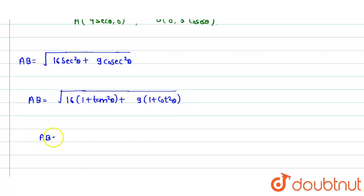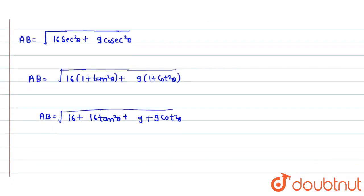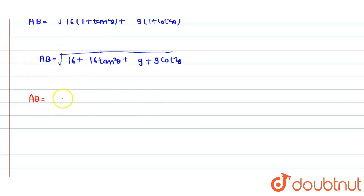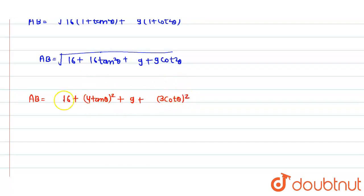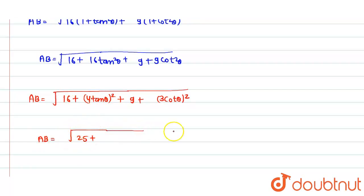Expanding: AB = √[16 + 16tan²θ + 9 + 9cot²θ]. We can rewrite this as AB = √[(16 + 9) + (4tanθ)² + (3cotθ)²] = √[25 + (4tanθ)² + (3cotθ)²].